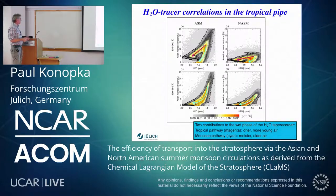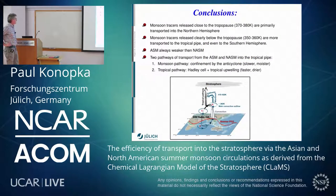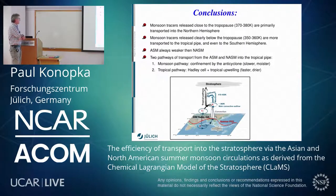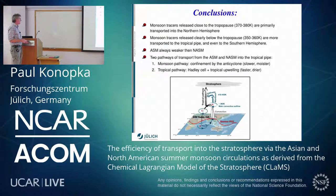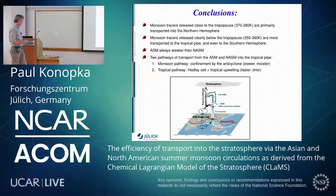Monsoon tracers released close to the tropopause at 370-380 K are primarily transported into the northern hemisphere. Monsoon tracers released clearly below the tropopause at 350-360 K are more transported to the tropical pipe and even to the southern hemisphere. The Asian summer monsoon is always stronger than the North American summer monsoon. We identified two pathways of transport from the summer monsoon regions into the tropical pipe: the monsoon pathway, confined by the anticyclone, which is slower and moister; and the tropical pathway via the Hadley cell and tropical upwelling, which is faster and drier.